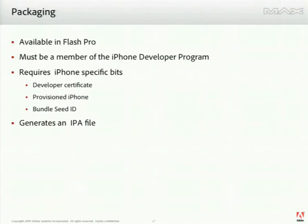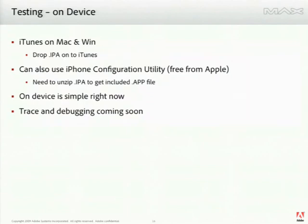It actually sounds like a lot, but it's really straightforward. Basically you go to apple.com, download these things, install them into iTunes, put them on your device, and you're done. It's really actually pretty easy. Once you're done with that, you give that information to Flash Pro, and while it's building you can actually start testing on a device.